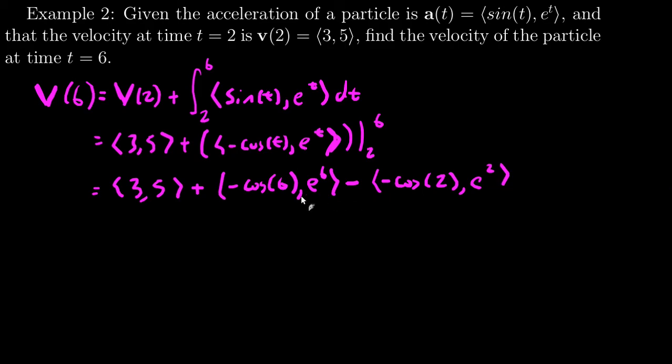I subtract those two, and if I wrap it all up and combine each of the i parts and the j parts together, I get 3 minus cosine of 6 plus, because I'm minus minus, cosine of 2, and 5 plus e to the 6 minus e squared.